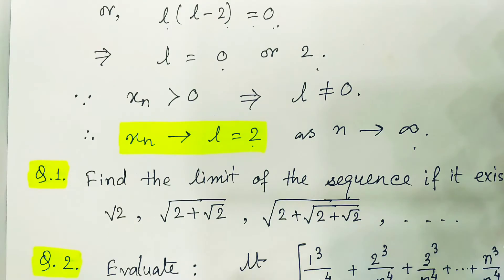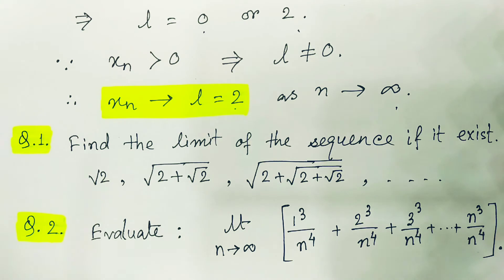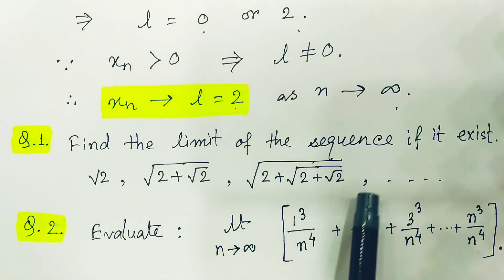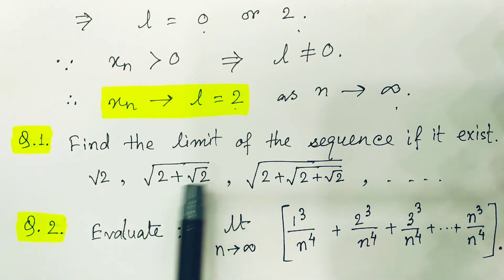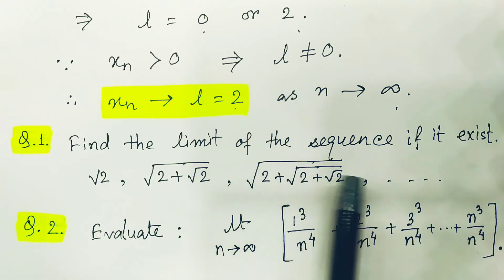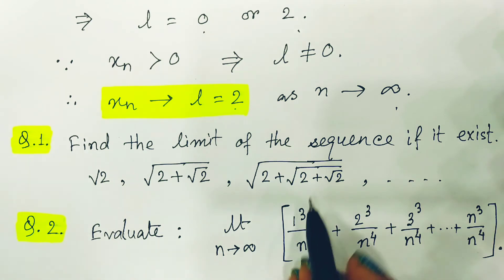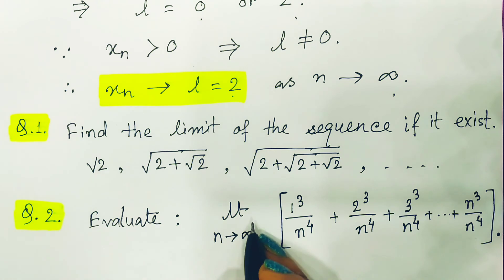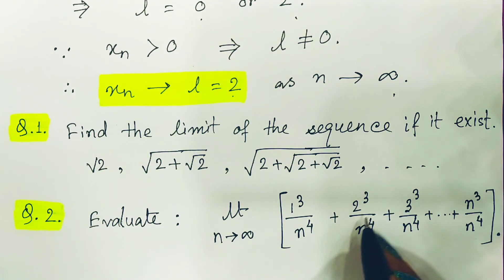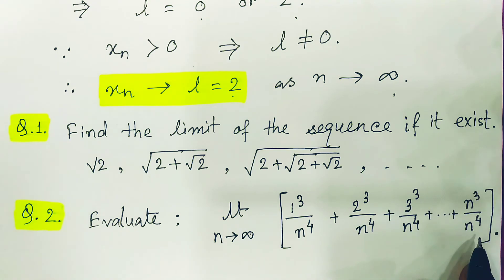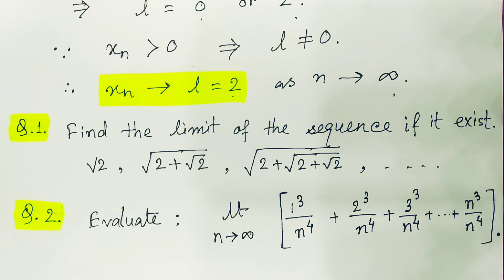Now here are two practice questions for you. First: find the limit of the sequence √2, √(2+√2), √(2+√(2+√2)) if it exists — similar to the previous problem but with addition instead of multiplication. Second: evaluate the limit as n tends to infinity of 1³/n⁴ + 2³/n⁴ + ... + n³/n⁴. Please write your solutions in the comment box.